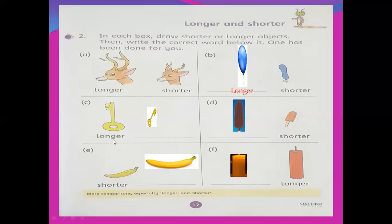Part C — longer is given. It means you will draw shorter. This is a key — you draw a key but shorter, and also write 'shorter'. Part D — shorter is given. This is an ice cream. I hope you like ice cream. The shorter is given, so you will draw an ice cream but longer, and also write 'longer'.